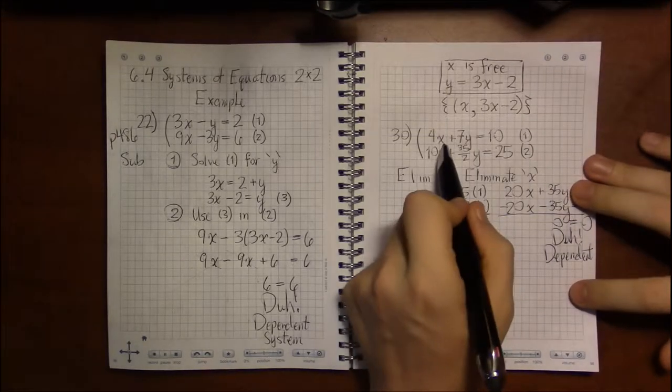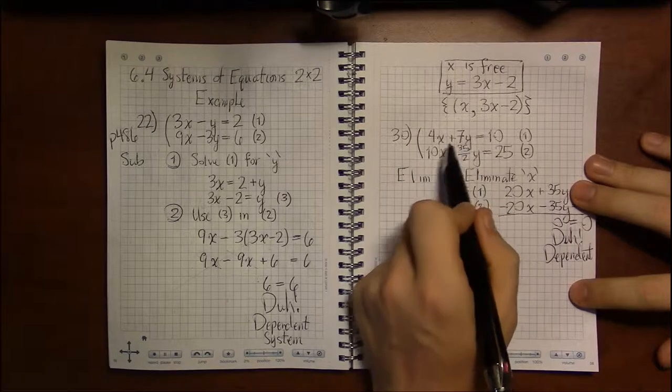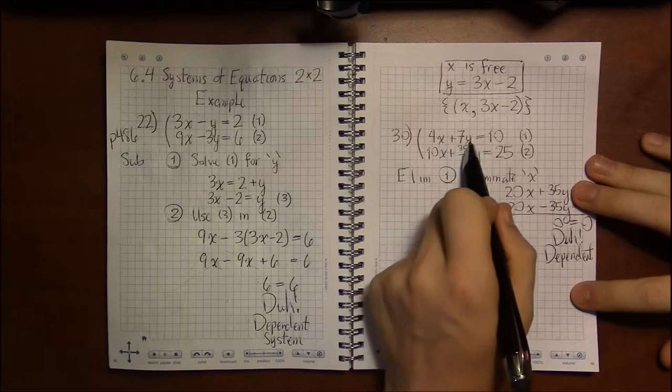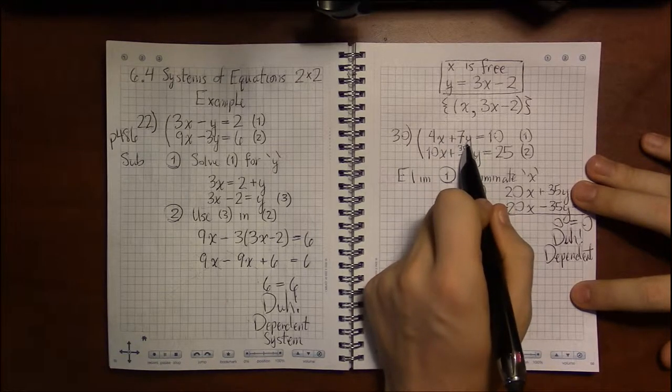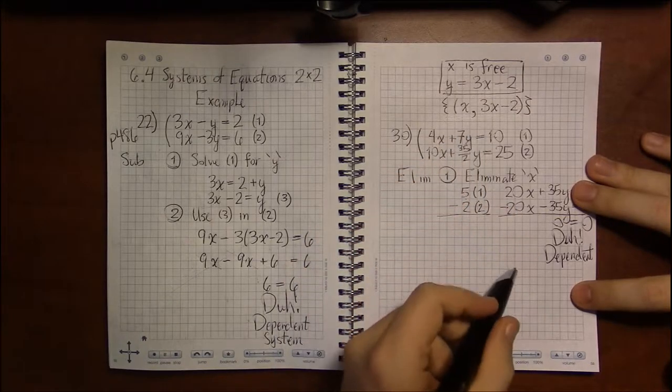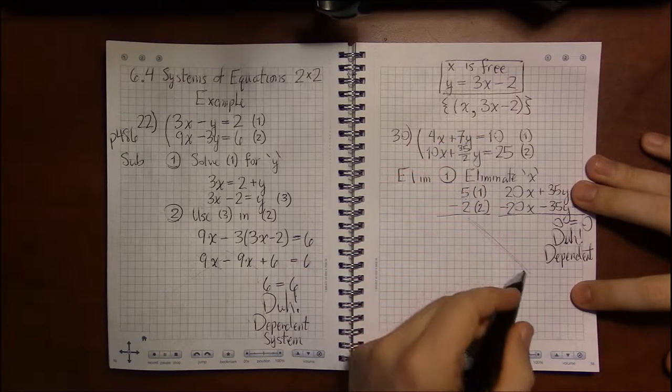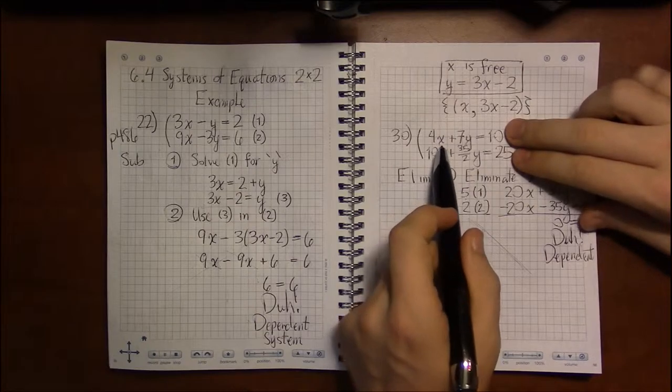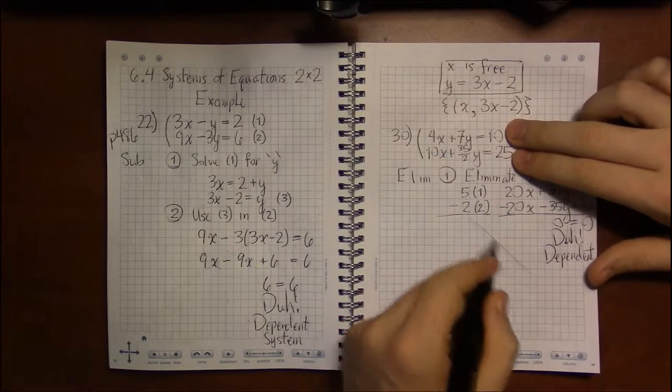So you're free to choose one of the variables, but once you choose one of the variables, you are fixed in your other choice because you still have to remain on the line. Remember, these two things are lines, they just happen to be the same line lying on top of one another.